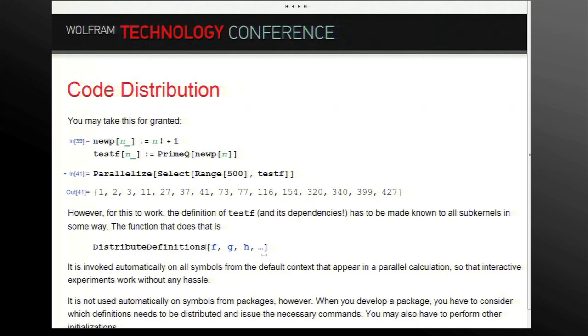You can do that by hand. The function is called distribute definitions. You will have to do it by hand if you use functions that you didn't just define interactively here but that come from some package. This idea doesn't work for everything. If you have a big package with some complicated function, you cannot just collect the definition and send it to the remote end. Reading a package can do more than just make definitions. So in this case you should use remote needs to read the package on all the remote kernels. By default the code distribution works only for symbols in your default context, in the global context for interactive work. If you write a package using this, you should think about which functions are needed and then issue the appropriate distribute definition commands explicitly.